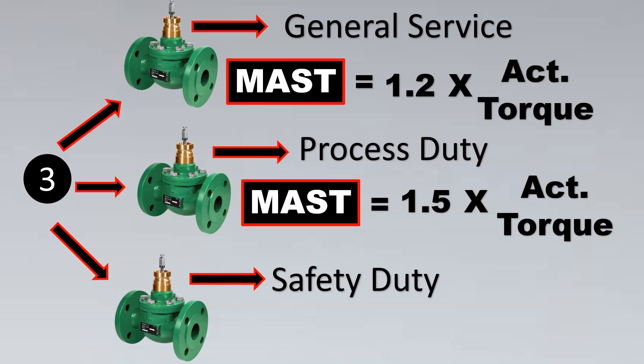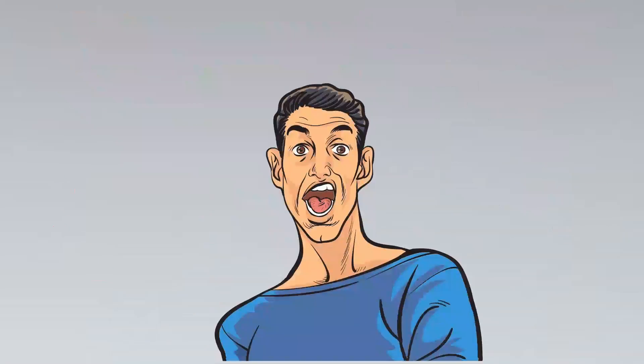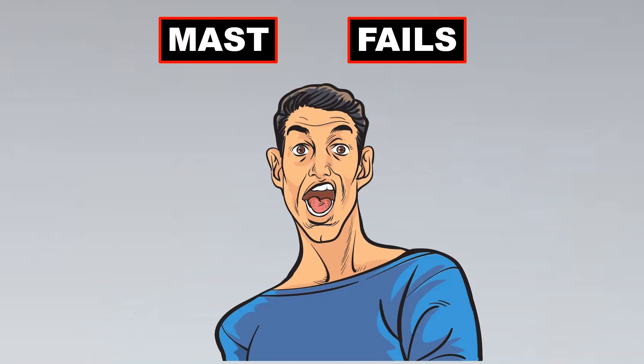When the valve is for safety duty applications — like shutting down the plant or preventing liquid escape — MAST should be equal to 2 times the actuator torque. These are the thumb rules to keep in mind while designing your on-off valve. And sometimes the safety factor can even go up to 2.5 times.